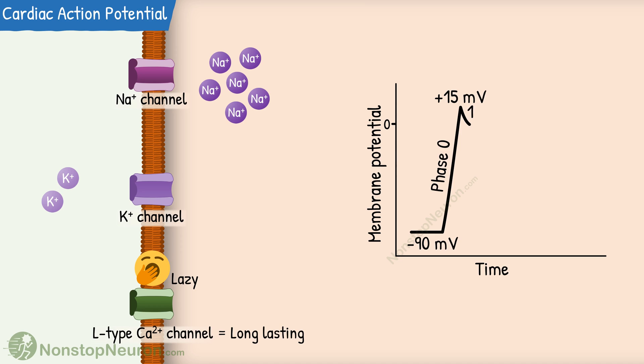They are activated during the upstroke and opens slowly. Now they allow the influx of calcium into the myocyte. Because of their slow nature, they stay open for a longer time and close very slowly. This allows an influx of calcium for quite some time.